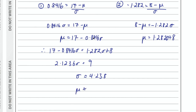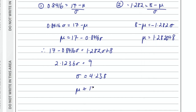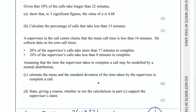Plugging sigma into the first equation: 17 minus 0.8416 times 4.238 gives approximately 13.43. So the mean is approximately 13.43 and standard deviation approximately 4.238. That's the mean and standard deviation of the supervisor's call times.